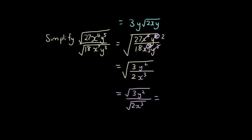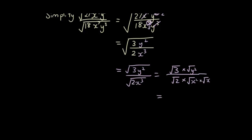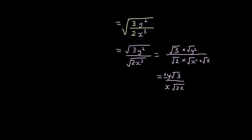I'm going to take the 3 and the y² separately, and separate the 2 and the x³ into x² times x. The square root of y² becomes y, and the square root of x² becomes x. So I have y times the square root of 3 over x times the square root of 2x, and you put a plus or minus sign at the top. That is the final answer — a complicated problem to simplify.